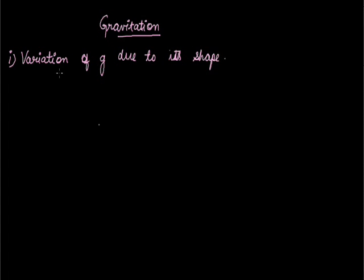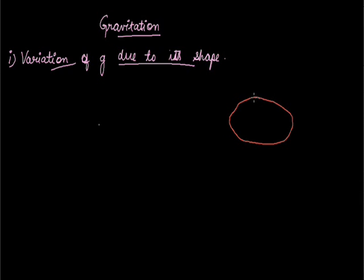This is our first topic we will be going to study today. As we know, our Earth is not perfectly circular. It is in the form known as an ellipse. Our Earth is greater at the equator and it is flat near the poles. Suppose, this is our Earth.